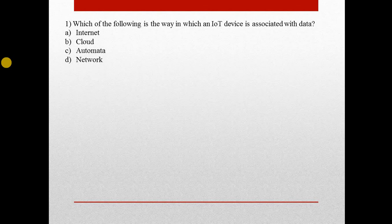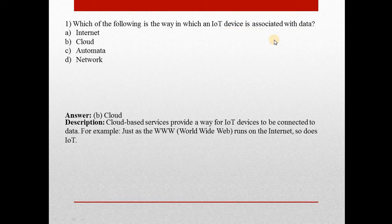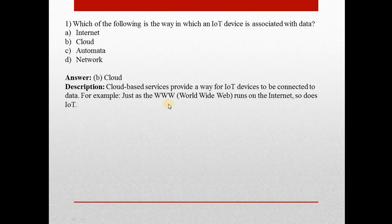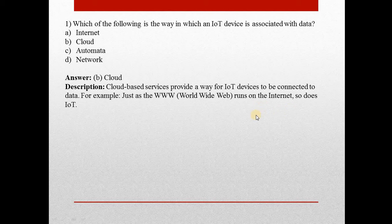Question number one: Which of the following is the way in which an IoT device is associated with data? Answer is B — Cloud. Cloud-based services provide a way for IoT devices to be connected to data. For example, the World Wide Web runs on the Internet, and so does the IoT.